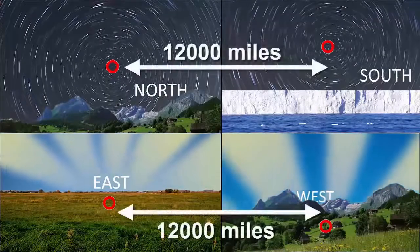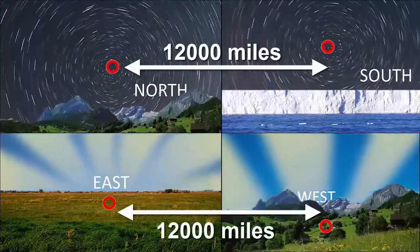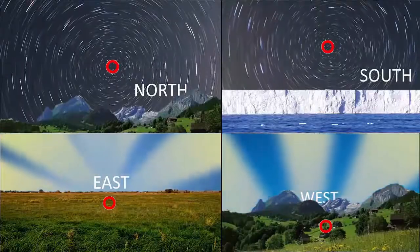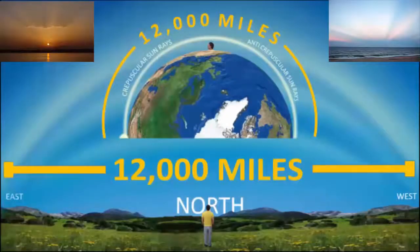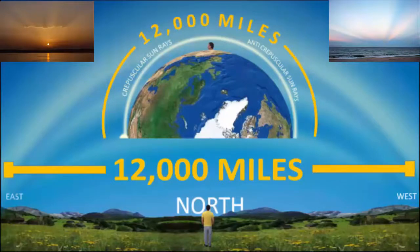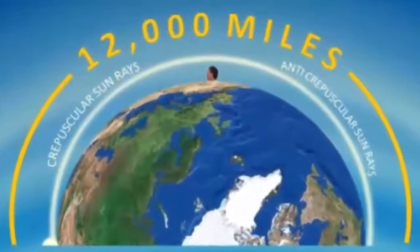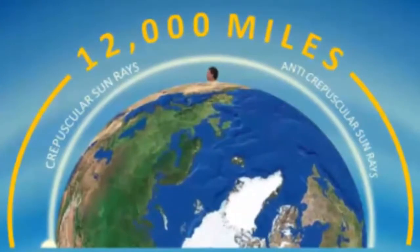We already know from crepuscular and anti-crepuscular rays how perspective works on a grand scale — over 12,000 miles. You see the sun rays diverging out from the sun, and then perspective converges them down to the other horizon over a 12,000-mile span. Quick side note: we can see the sun 6,000 miles away when it's rising. If it's throwing out crepuscular rays and the anti-crepuscular rays go another 6,000 miles to converge on the other side, that's 12,000 miles total. How can we see that on a ball? That seems to work for a flat earth, but how does it work for a ball?